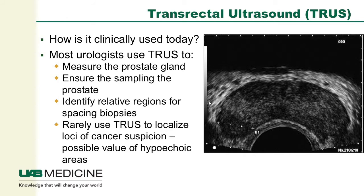Transrectal ultrasound — how is it clinically used today? The standard of care is the process by which urologists use transrectal ultrasound to measure the prostate gland during the procedure, ensure that the sampling of needle cores is within the prostate gland. The ultrasound is also used to identify relative regions, or those zip codes of the biopsies, to space the random biopsies across different regions of the prostate. But rarely is transrectal ultrasound used to localize loci of cancer suspicion.